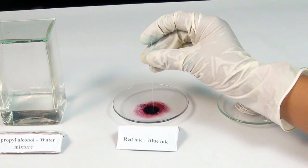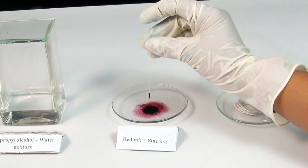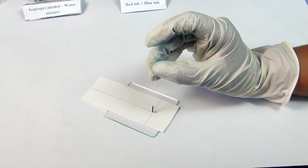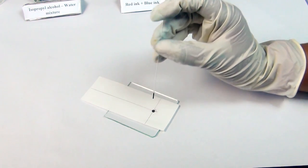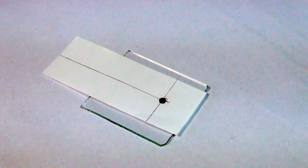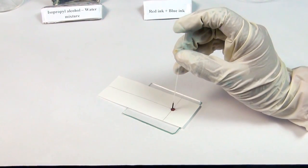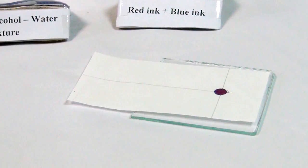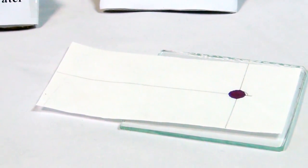Take the mixture of red and blue inks and apply it at the point. Allow it to dry in open air. Put another drop on the same spot and dry again so that the spot is rich with the mixture.